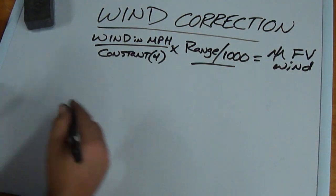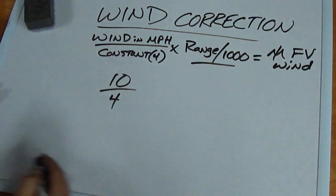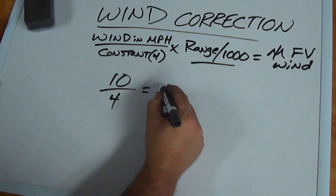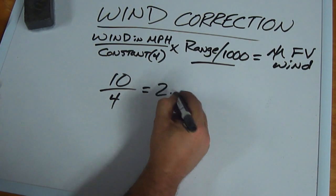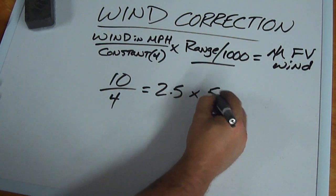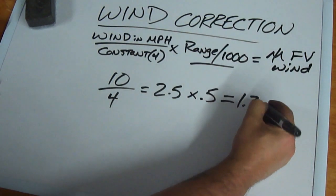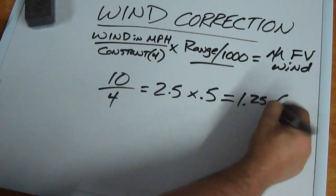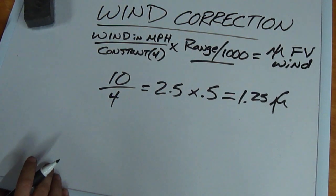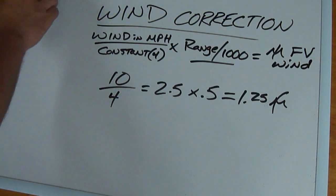If we get a ten mile an hour wind, divide it by four, we're going to get 2.5, not a big deal, times .5, still at 500 yards, equals 1.25 mil and a quarter full value wind. I hope I'm not going too quick with this.